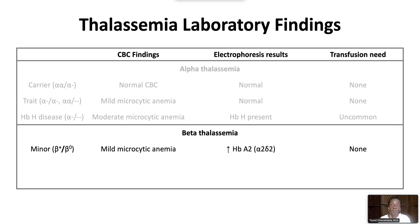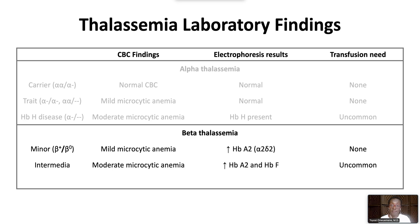Beta thalassemia minor, or carrier state, is characterized by mild microcytic anemia. Hemoglobin electrophoresis shows increased hemoglobin A2. No transfusion is needed.